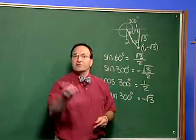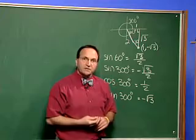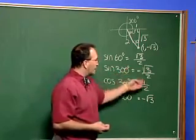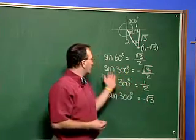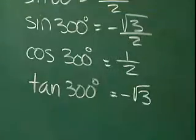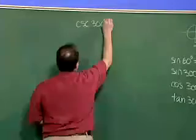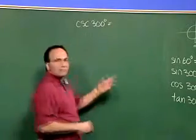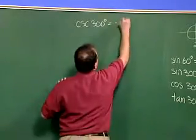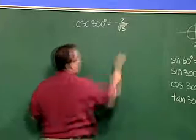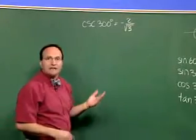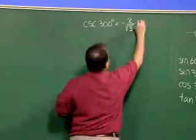Well, for the three reciprocal functions, we can simply take the reciprocal of these, and so for cosecant of 300 degrees, it's equal to negative two over the square root of three.